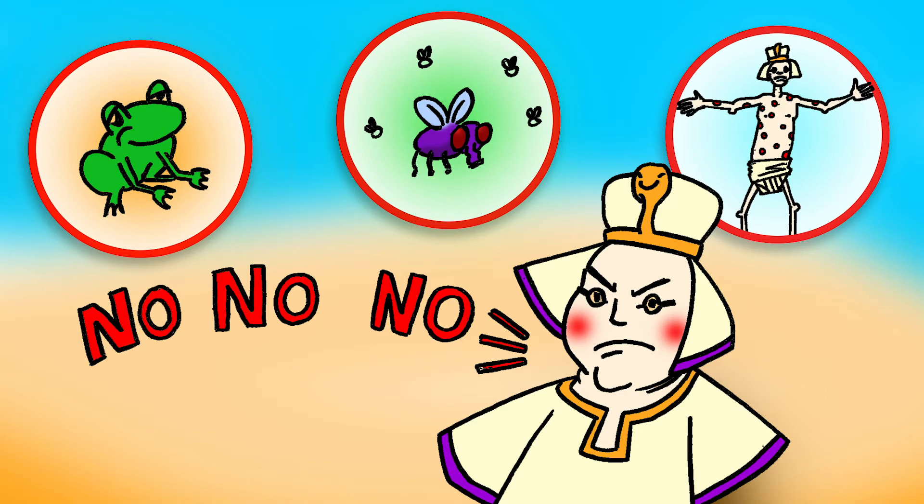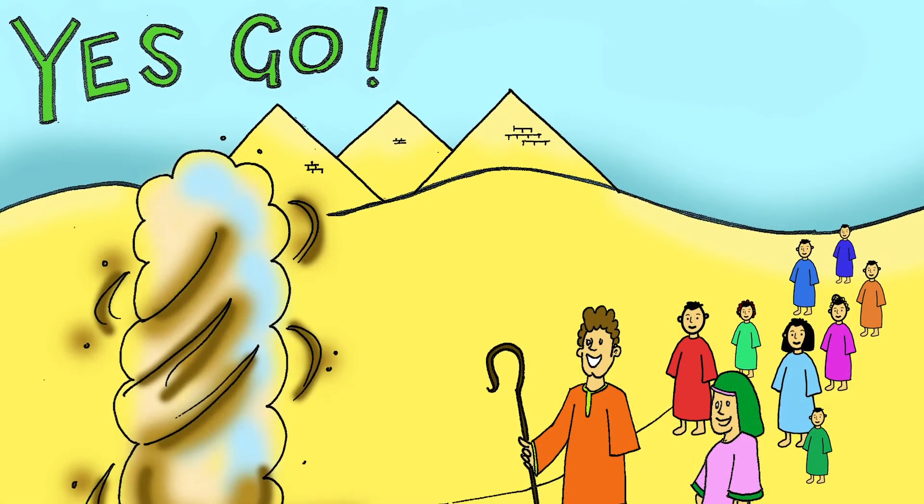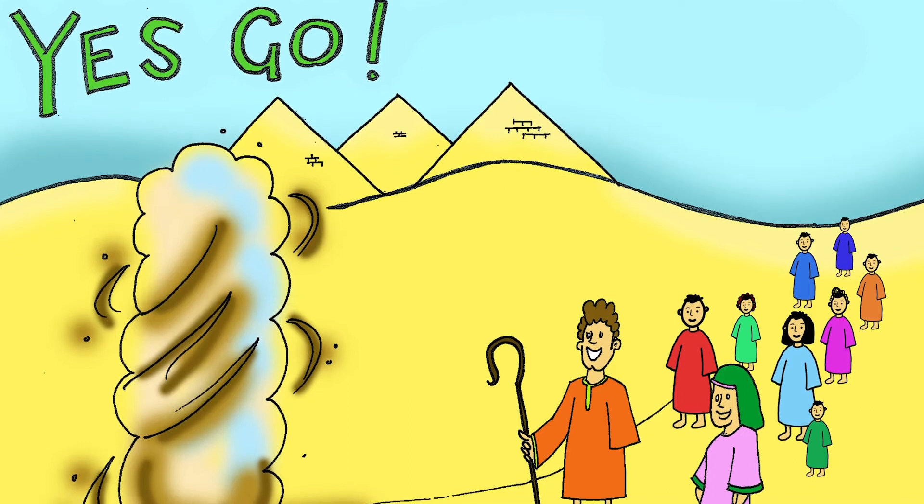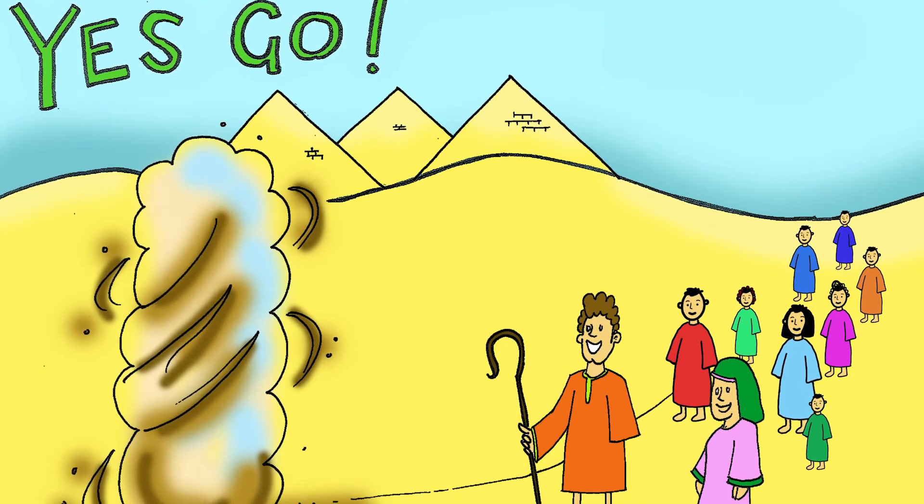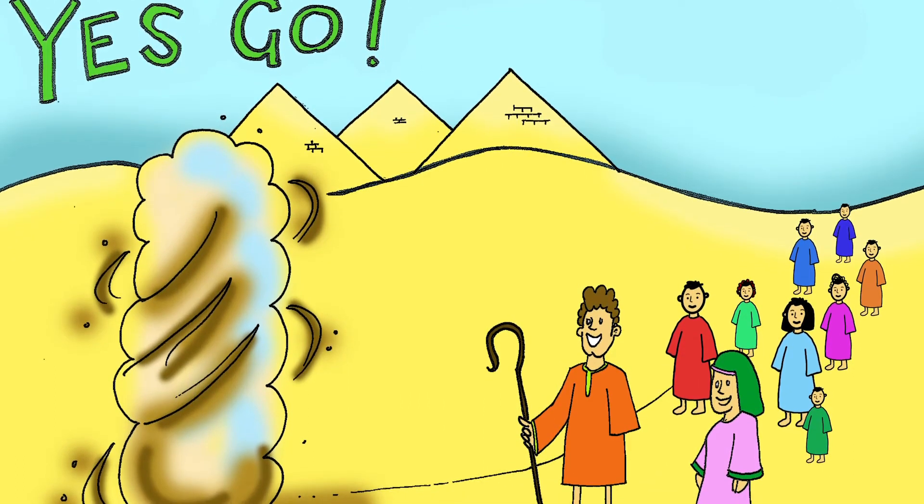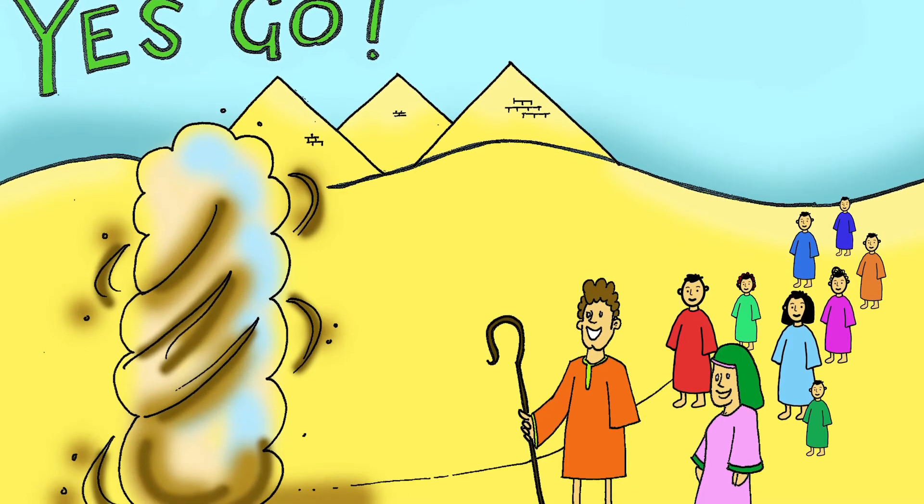If only he had done that the first time. But unfortunately, he was a very stubborn king. So Moses and the Israelites packed up all their belongings, gathered all their sheep and cattle and started on the journey.